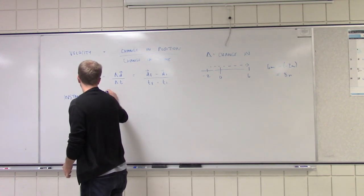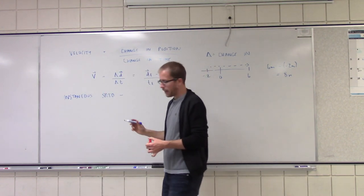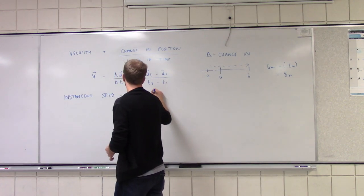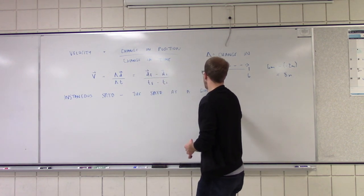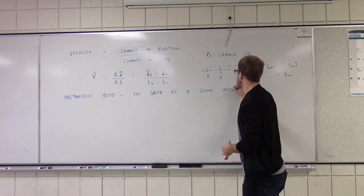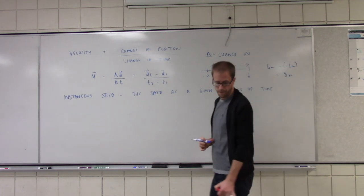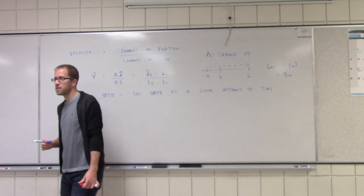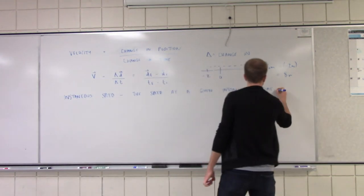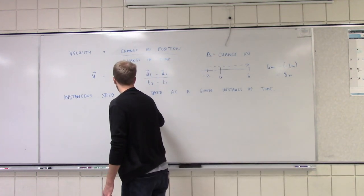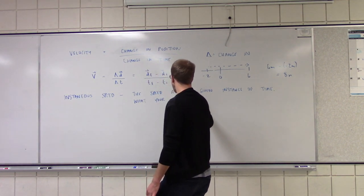So instantaneous speed is the speed at a given instance. And what instrument in your vehicle tells you this? Speedometer. Right, it's a speedometer. This is what your speedometer says.